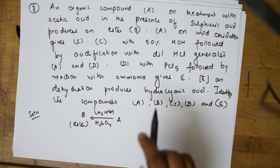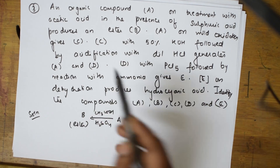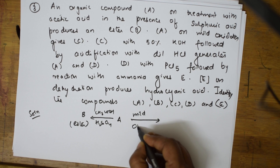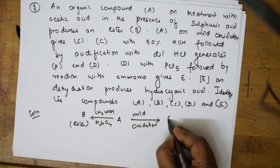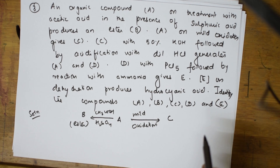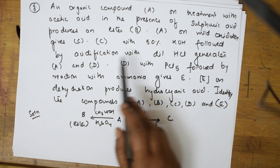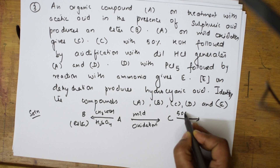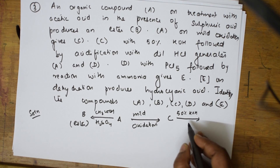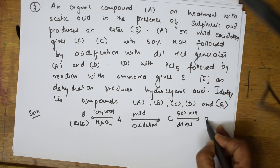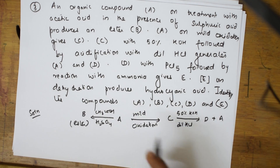Then they said A on mild oxidation gives C. The same A is allowed to undergo mild oxidation and it has given C. Now, this C with 50% KOH was treated with 50% potassium hydroxide followed by acidification with dilute HCl.